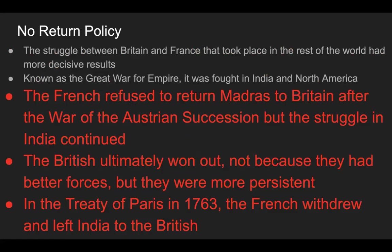The struggle between Britain and France in the rest of the world had more decisive results. Known as the Great War for Empire, it was fought in India and North America. The French refused to return Madras to Britain after the War of the Austrian Succession, but the struggle in India continued. The British ultimately won out — not because they had better forces, but because they were more persistent. In the final Treaty of Paris in 1763, the French withdrew and left India to the British.